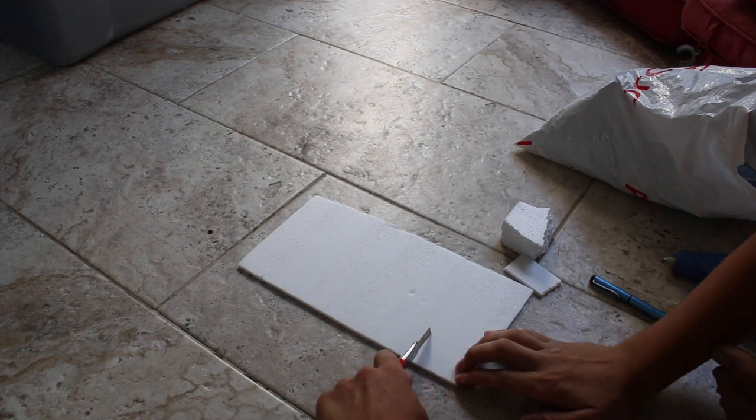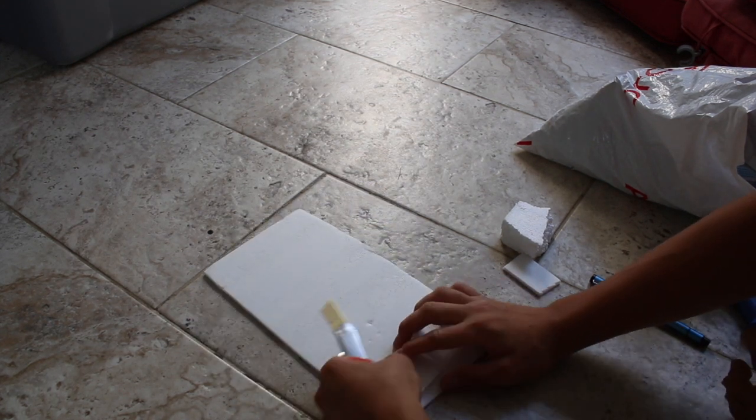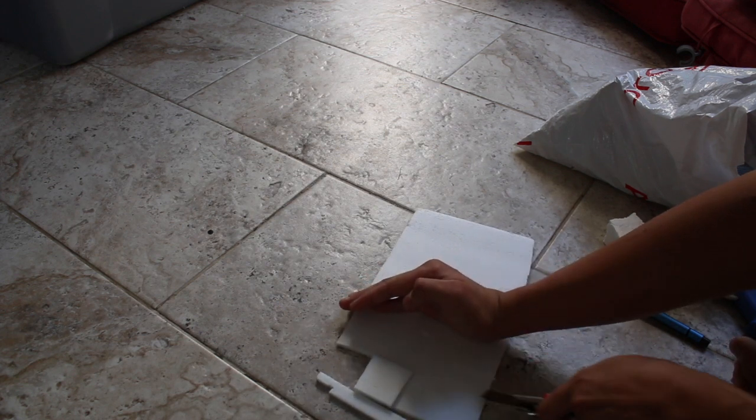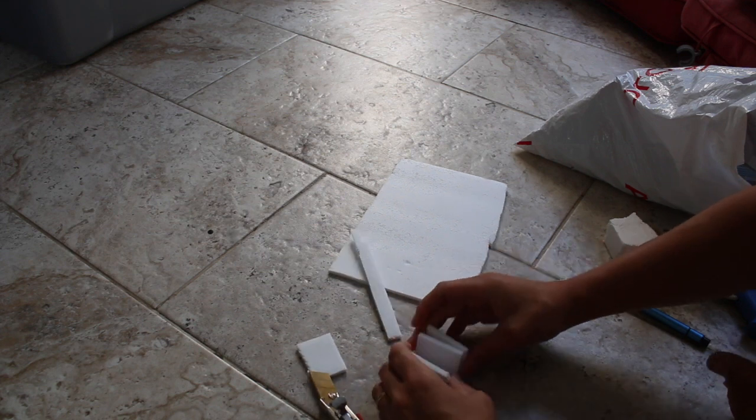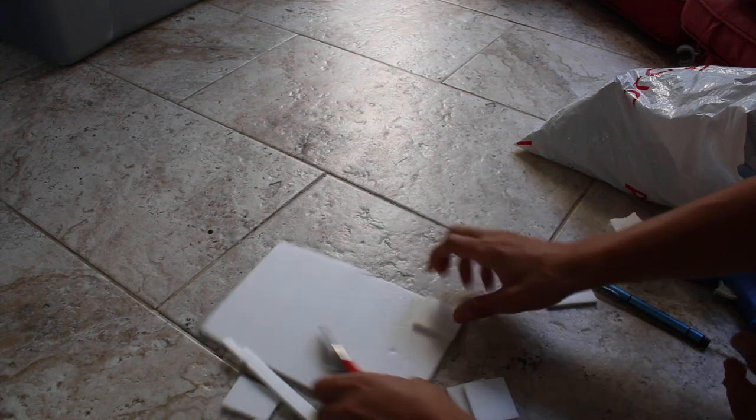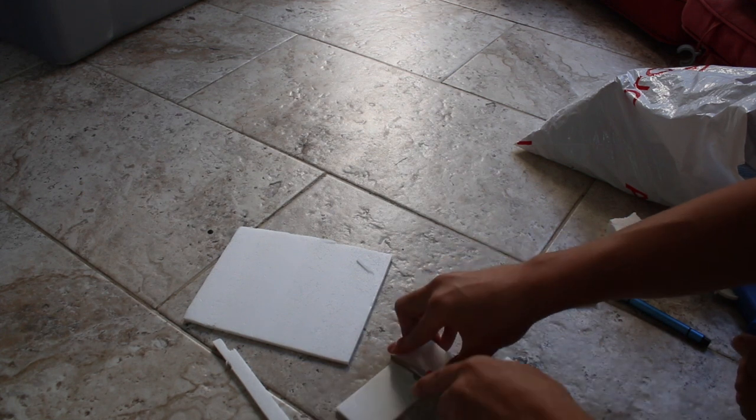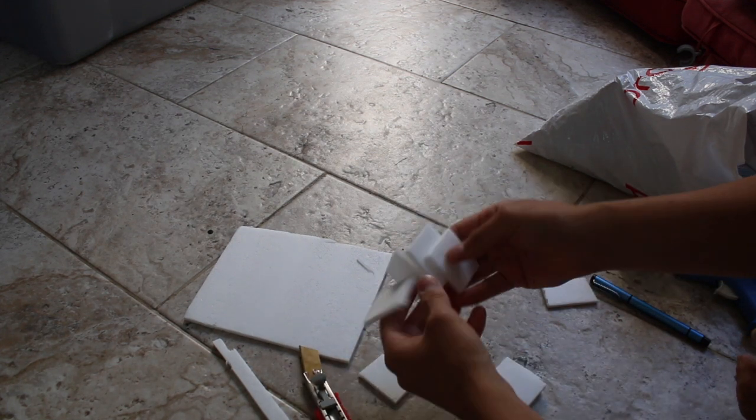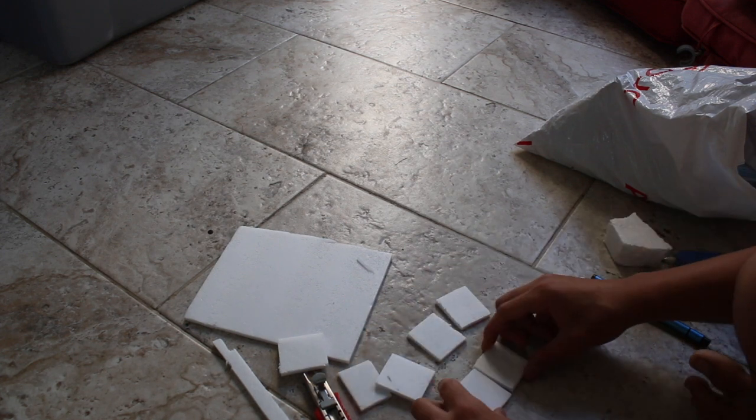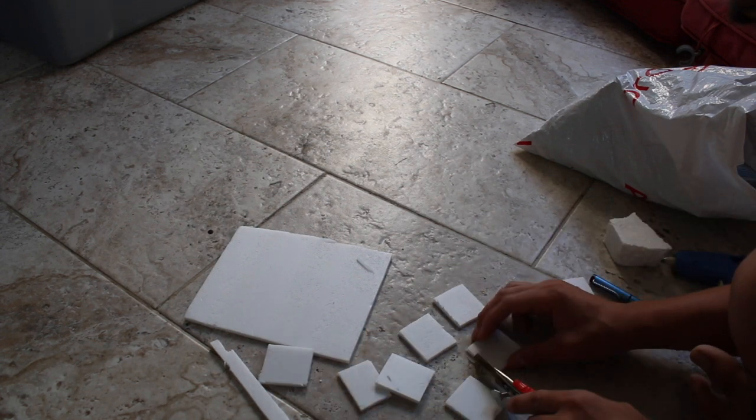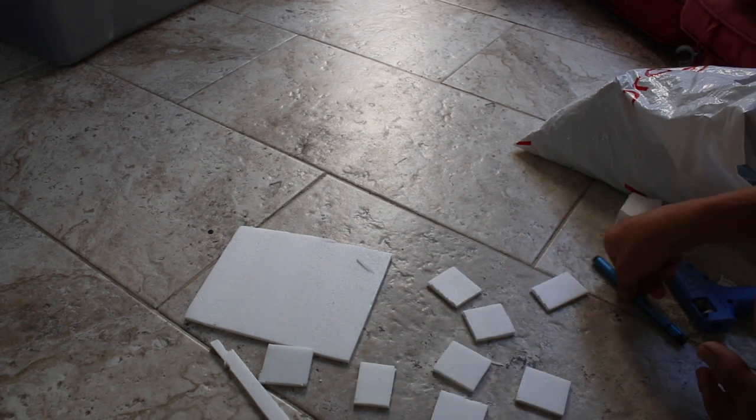Alright, to start this project off, you get your dollar store foam board, you peel the paper off both sides of it, and then you have just the foam part. You take your blade and you're going to size up how big do you want this crate. You could do all different sizes. With this cheap thin foam, you can make mistakes and you could just make more. That's why it's great working with the dollar store foam.